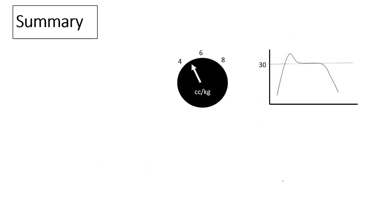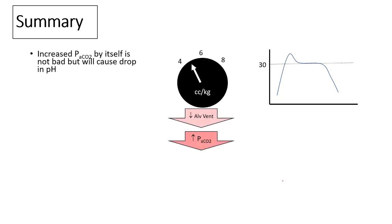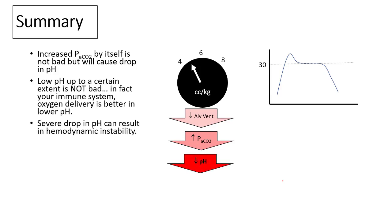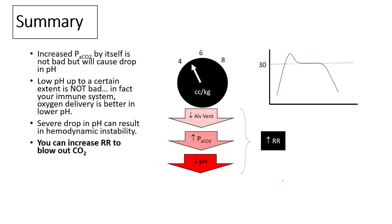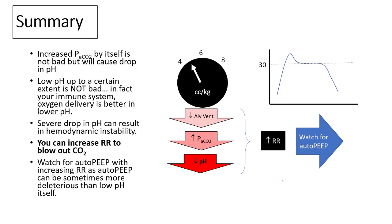In summary: drop tidal volume to achieve a plateau pressure of 30, anticipating that alveolar ventilation will decrease and PaCO2 will rise. A rise in PaCO2 by itself is not bad, but it will cause a drop in pH. A mildly low pH is acceptable — in fact, the immune system works better and oxygen delivery is better at lower pH. To counter the hypercapnia, increase respiratory rate while watching for auto-PEEP, ensuring exhalation is not compromised.